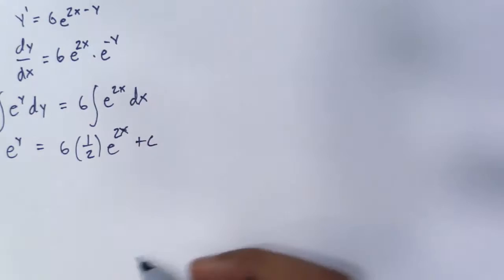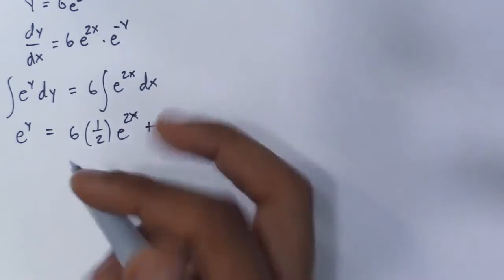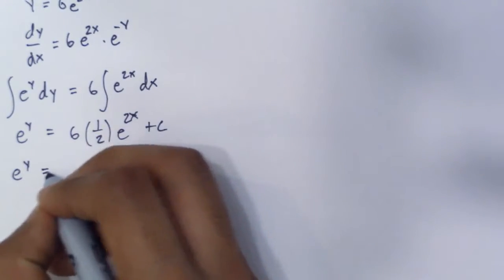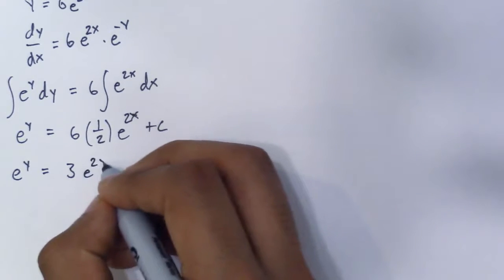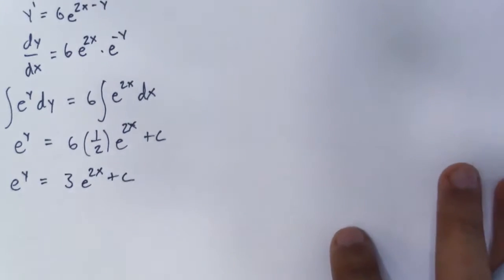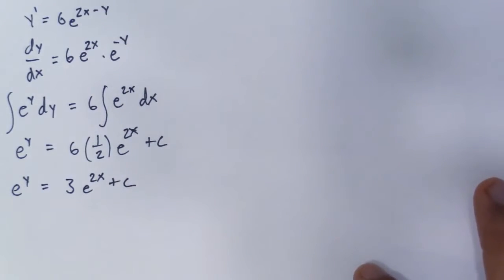And then plus c, as we all know. That can be simplified: e^y equals 3e^(2x) plus c. Now we have our general solution, but you guys may want to take it further, such...